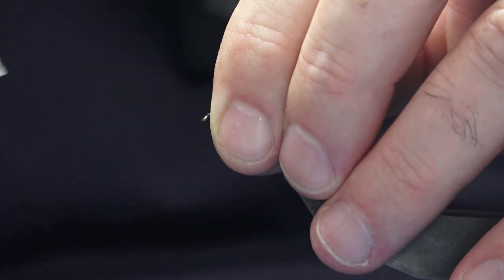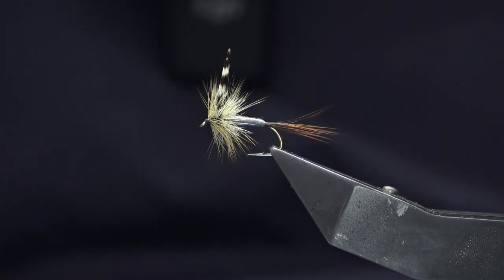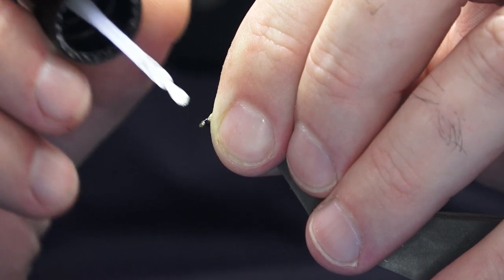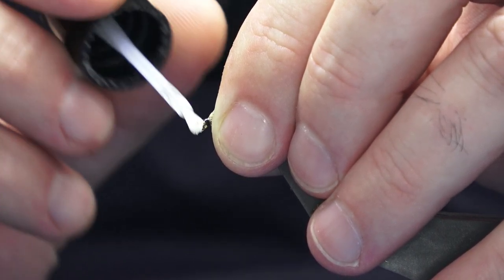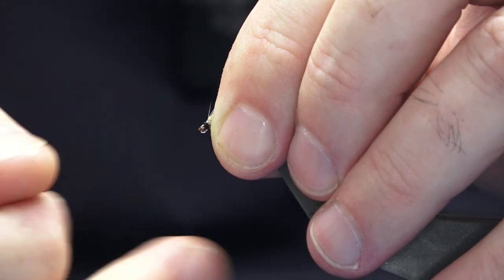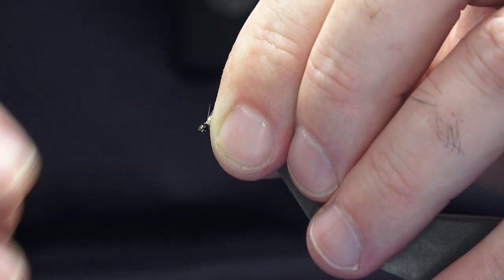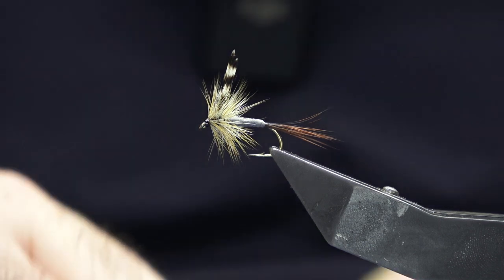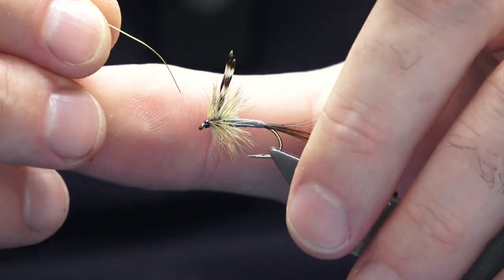At the front, just come in and bring everything back. See the head of the fly there? Just bring it back. Don't worry about the hackle, just hold everything, then you can come in and take away the surplus. Make sure the eye is clean.